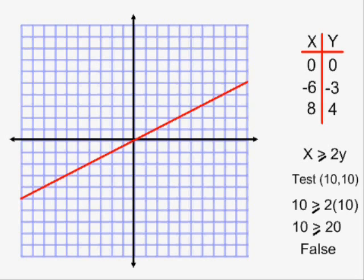I then get an inequality that simplifies to 10 greater than or equal to 20, which is false. Since true means towards, that means false means away.